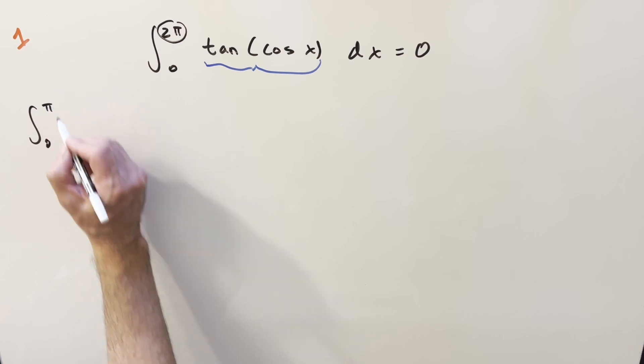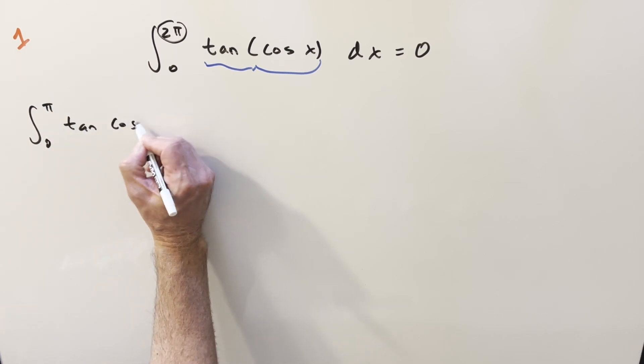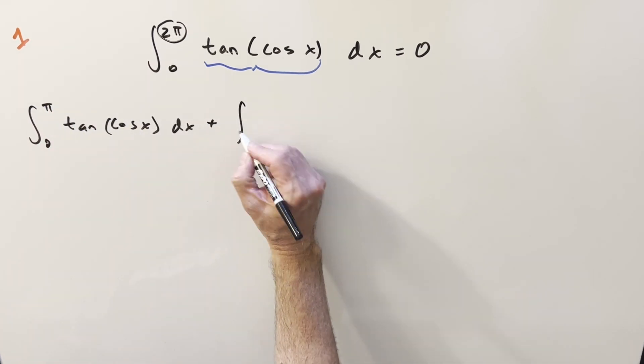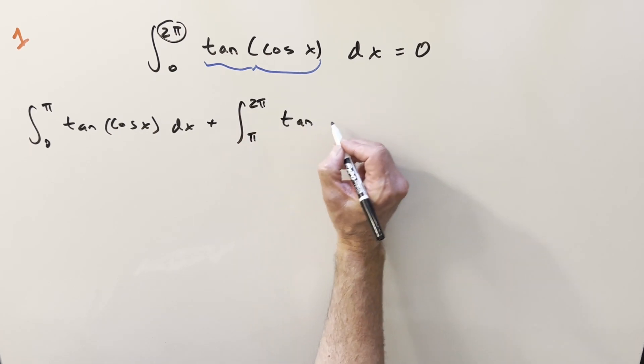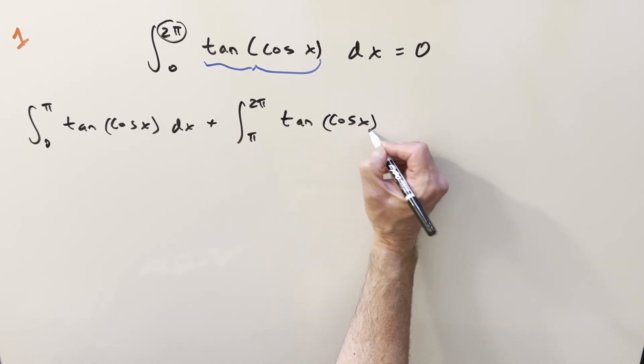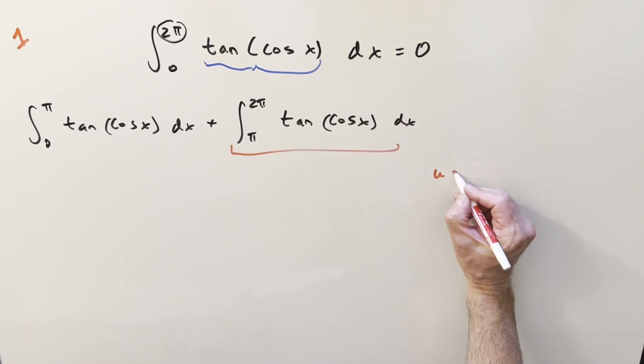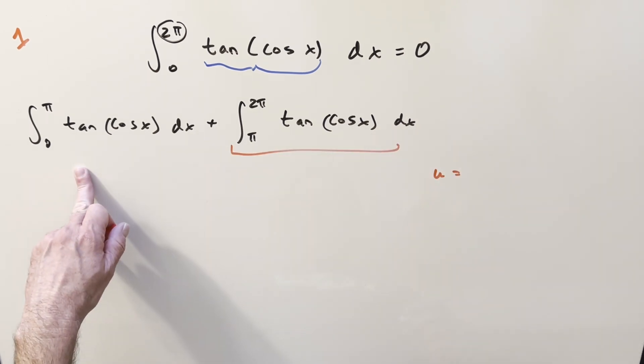So we have one integral going from zero to pi of tan cosine x, then our second integral is just going to be going from pi to two pi. And then what we're going to do is we'll do a u substitution on the second one. We'll just focus on this one. And for the substitution, all I want to do is adjust the balance so that it looks like this.